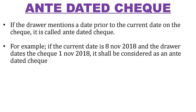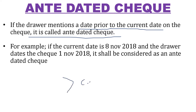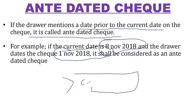Next is the ante-dated check. What happens if the drawer mentions a date prior to the current date on the check? It is known as an ante-dated check. For example, today is 8 November 2018, but the drawer has written 1 November 2018 on the check. In this case, such a check is called an ante-dated check.